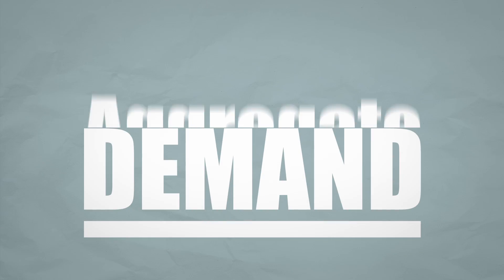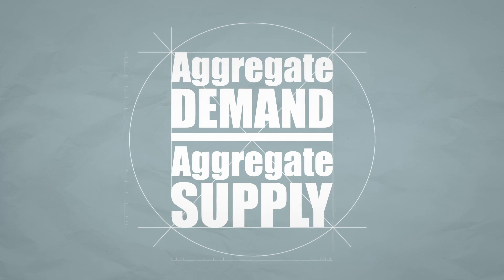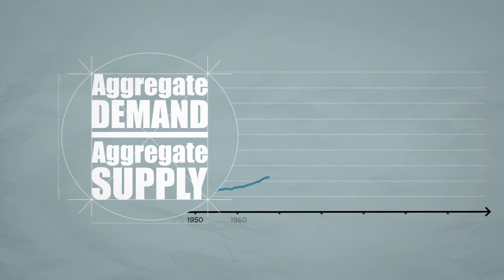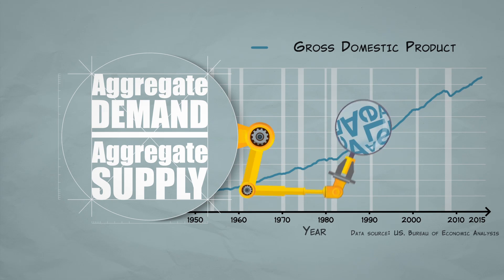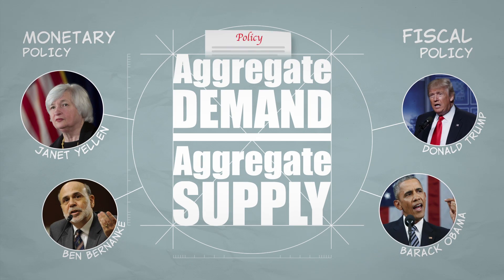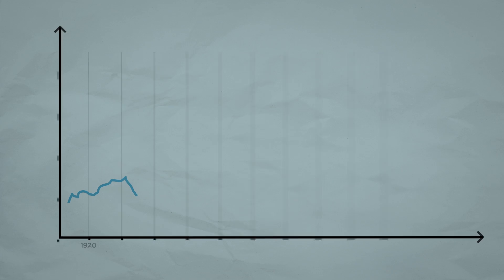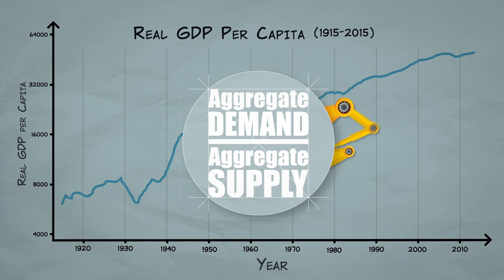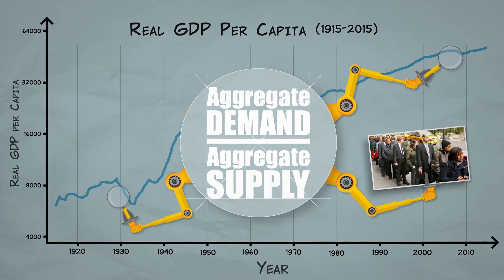In the next set of videos, we're going to develop a model of business fluctuations called the Aggregate Demand, Aggregate Supply Model. First, we'll learn the basics of the model. Then we'll use the model to help us understand how shocks can disturb an economy and how policy might help us to reduce the size or cost of business fluctuations. Finally, we'll apply the model to explain some of the largest economic catastrophes in U.S. history, including the Great Depression.